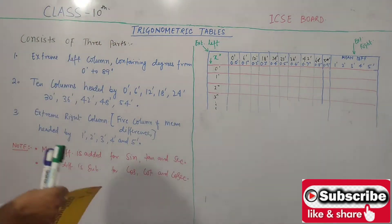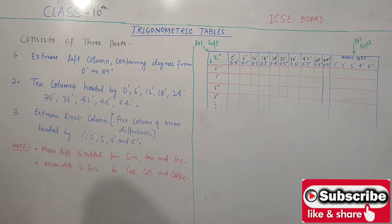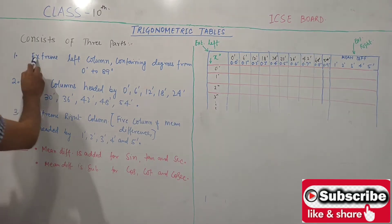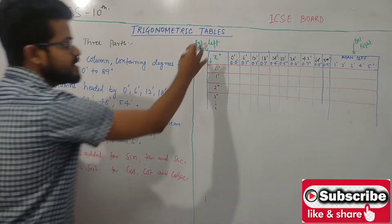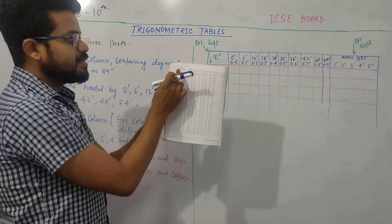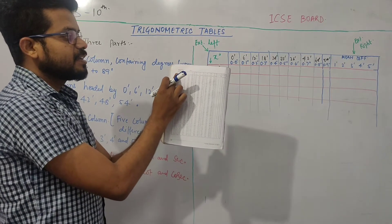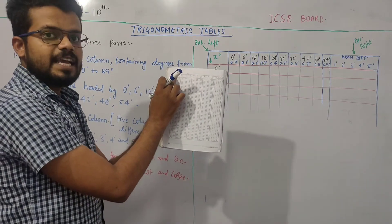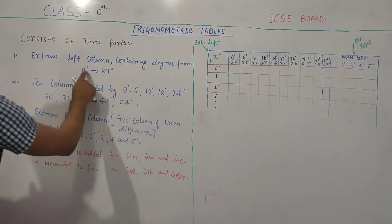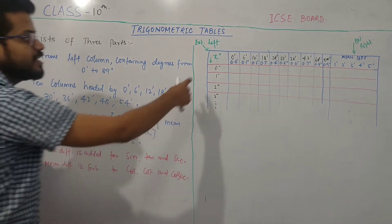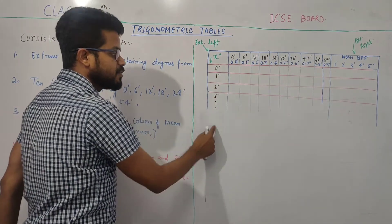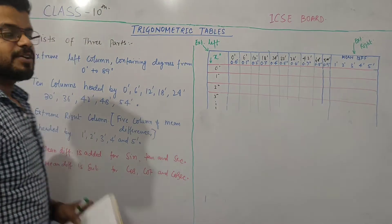The table consists of three parts. The first one is the extreme left column. In your book, this is the extreme left, where at the top is written 'x degree'. This extreme left column contains degrees from 0 degree to 89 degrees — written as 0 degree, 1 degree, 2 degree, 3 degree, 4 degree, up to 89 degree.